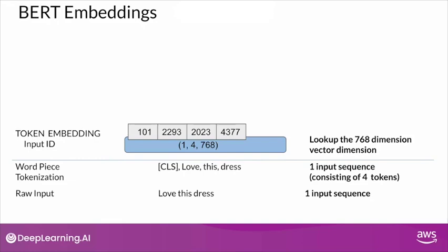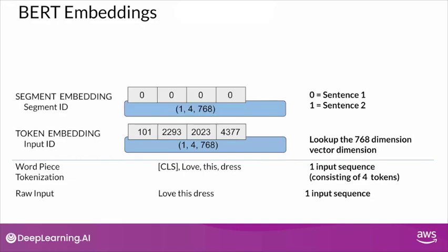The next step is to perform segment embedding. Segment embedding becomes much more important when there are multiple sentences in the input sequence. A segment ID of 0 represents that a sentence is the first sentence in the sequence, and similarly, a segment embedding of 1 represents that it is the second sentence in the input sequence. Here I have only one sentence, so for all the individual tokens I get a segment embedding of 0.